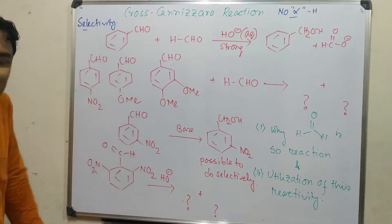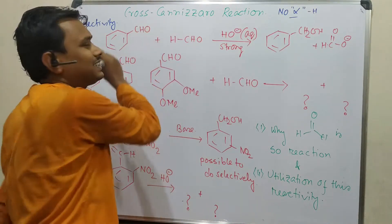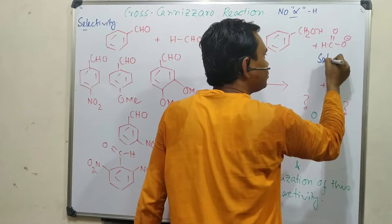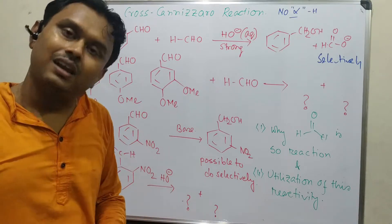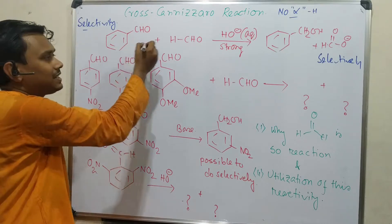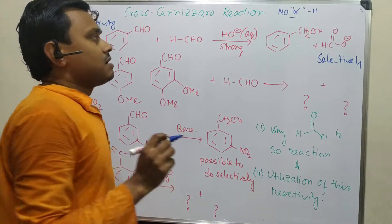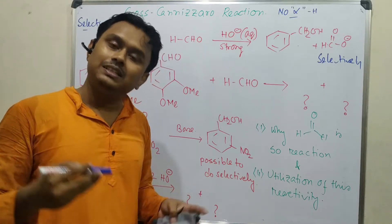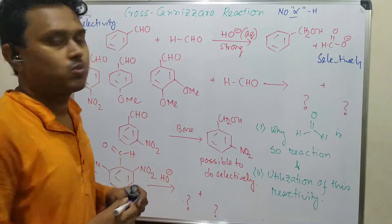It is observed that if we perform the cross Cannizzaro reaction with formaldehyde and any other aldehyde — both having no alpha hydrogen — then formaldehyde is selectively oxidized to formic acid, and the other aldehyde is reduced to the alcohol. For example, with benzaldehyde and formaldehyde, the products are benzyl alcohol and formic acid. Aldehydes that are not very reactive may require strong alkali and high temperature in normal conditions, but this can be avoided by using formaldehyde.